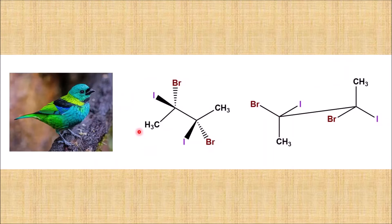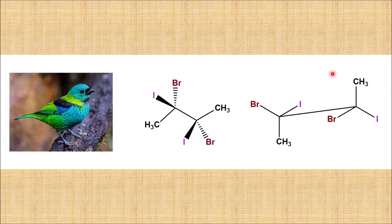Let us first see how to convert wedge-dash projection formula to sawhorse projection formula. Looking at this wedge-dash projection formula, this is the front carbon from a bird's-eye perspective — the first carbon or the carbon closest to the observer. The iodine atom, which is out of the plane of the paper, appears to the bird as being on the right side. Bromine, going into the plane of the paper, appears on the left, and the methyl group, which is in the plane of the paper, is at the bottom.